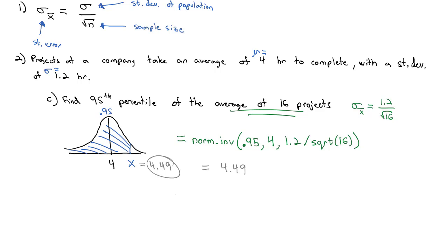In summary, whenever we're working with a sample and calculating the mean of the sample, we have to adjust the standard deviation by dividing by the square root of the sample size to get the standard error.